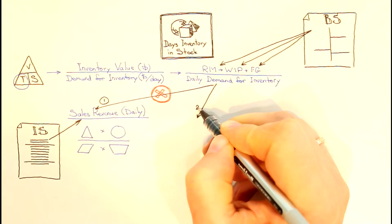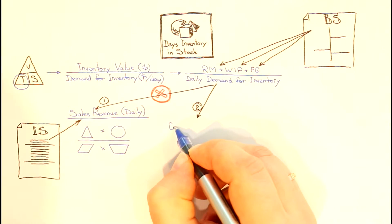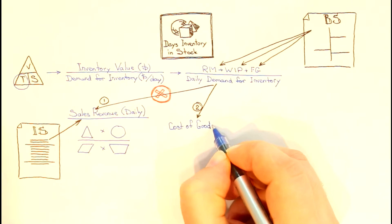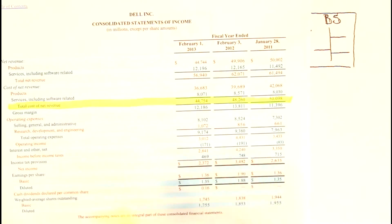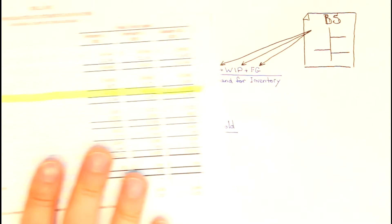The second method suggests using cost of goods sold for the inventory demand. Cost of goods sold represents the sales volume at cost. Here we have stock volume compared with the sales volume.